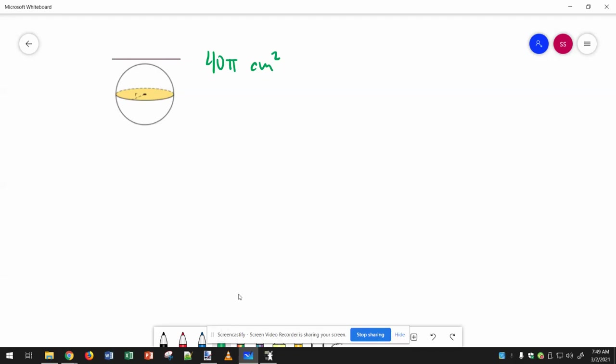In this problem, we are told that the shaded circle has an area of 40π centimeters squared. So we're going to set this equal to πr² to figure out what the radius is first.